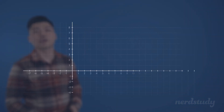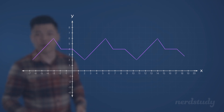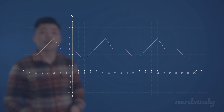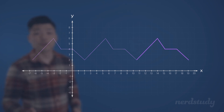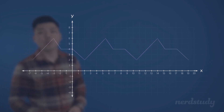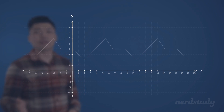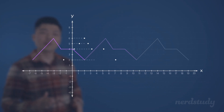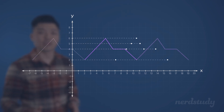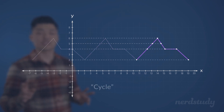Let's begin by drawing out a random-looking function on a graph. Notice how this section keeps recurring over and over again. One way to think about it is that these particular y-values are constantly repeating — and this is what we mean by the cycle.